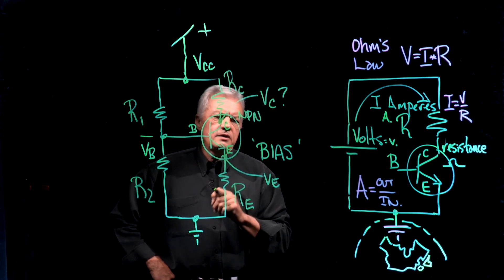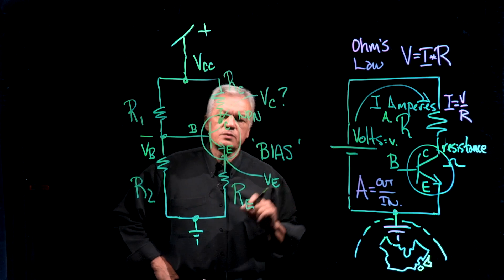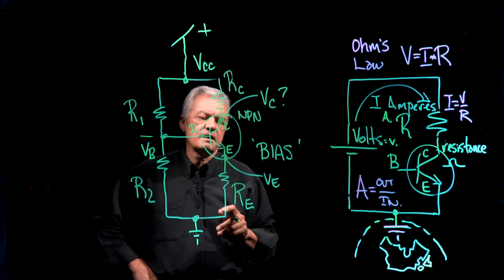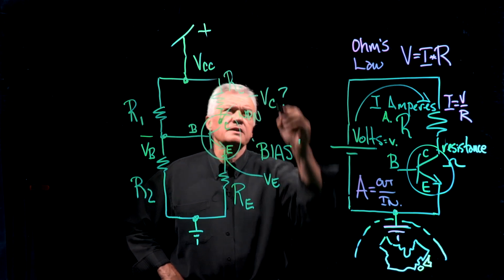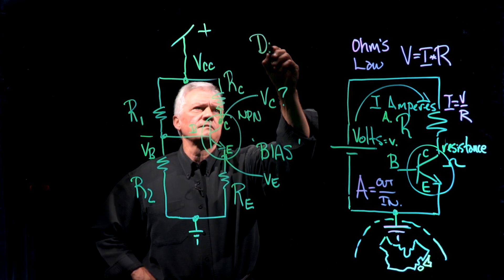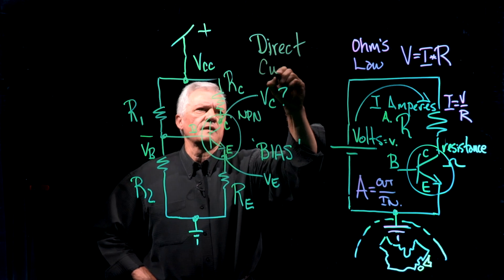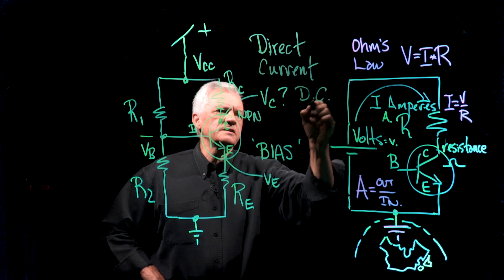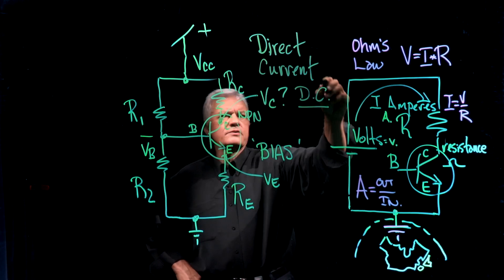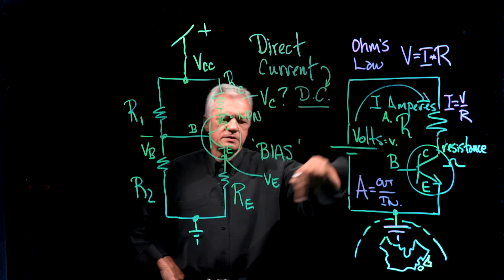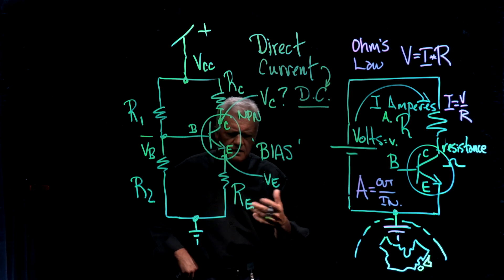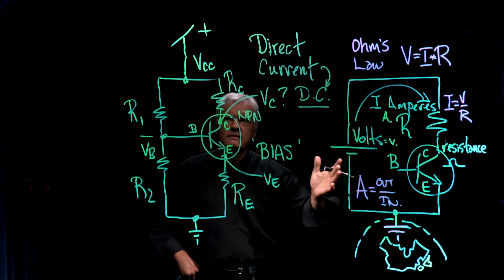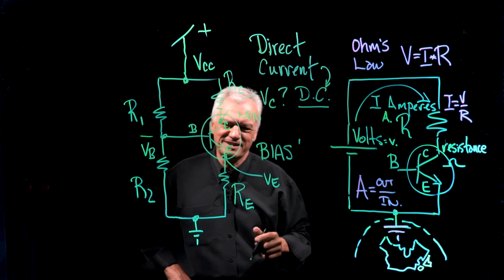One thing you'll notice is that because the current flows in one direction — at least from the perspective of setting this up — this is known as direct current, abbreviated in our business DC. Direct current means it goes in one direction. I use the analogy of eating: you eat from the mouth and it comes out the other end. We don't do it the other way around, so get your polarities right when you do these things.